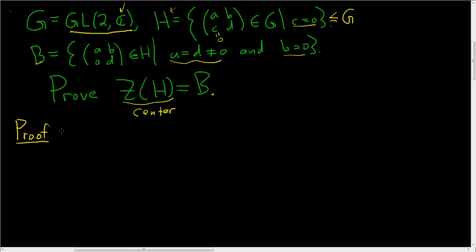There are a lot of things that I won't write down, but I'll try to say everything, at least in words. If you're actually proving this, you should write everything down, every little detail. We have to show that the center of H is equal to B, so we have to show two things. To show two sets are equal, we have to show they are subsets of each other. We'll start by showing the center is a subset of B.